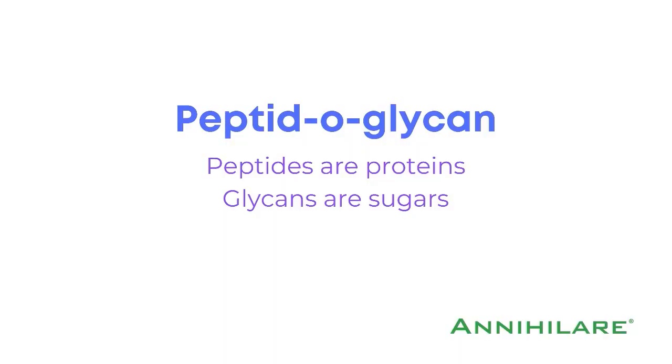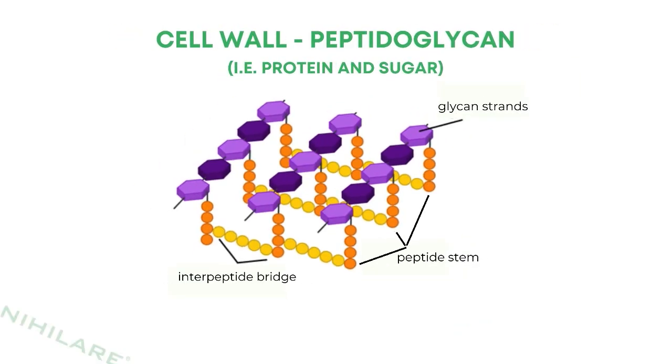The cell wall is made of a substance called peptidoglycan. Simply put, peptides are proteins, and glycans are sugars. The cell wall provides structural support to withstand external forces and to protect its inner workings. The main goal of antimicrobials like disinfectants and even antibiotics is to break up the cell wall so the germ will implode or explode, or to bypass it altogether so that we can do some different disruption inside the cell itself.